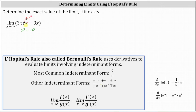To begin, notice both terms have a common factor of x. Let's write the given limit as the limit as x approaches infinity. Let's go ahead and factor out the x from both terms and write the x on the right side. Factoring out x, we have three e to the power of one divided by x minus three.